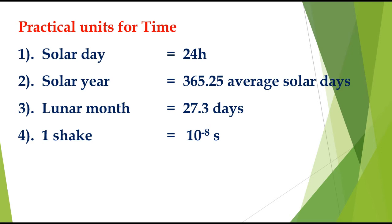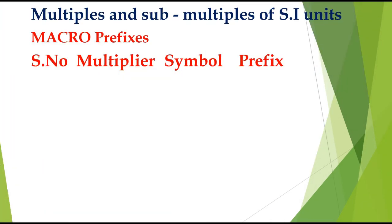In numerical problems in physics we require multiples and sub-multiples. Multiples and sub-multiples of SI units are generated by adding appropriate prefixes to the units. There are two types: macro prefixes and micro prefixes.